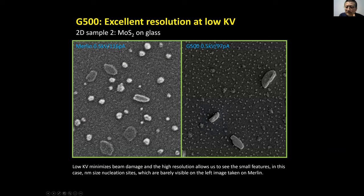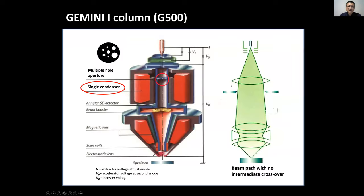Let's compare Merlin and G500 for low kV imaging of 2D material. Merlin's image is not that good — a bit noisy. G500 does a really good job imaging 2D material at low kV. Why? It depends on the column design. G500 uses the Gemini column — inside you have a condenser and objective lens. Merlin has two condensers, G500 has only one condenser, but it's optimized for low kV.